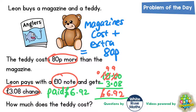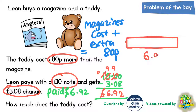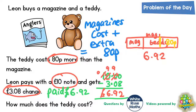So Leon must have paid £6.92 for his magazine and teddy. Now we're going to imagine a bar model. The total is £6.92, and within that we've got the cost of the magazine, and the other part must be the cost of the teddy. But the teddy is the same cost as the magazine plus an extra 80p, so we can split the teddy's cost into 80p plus the magazine's cost again.